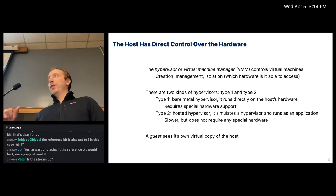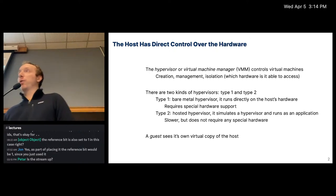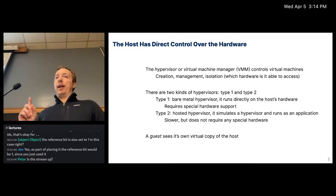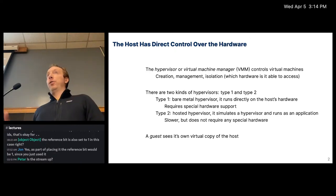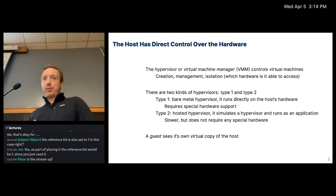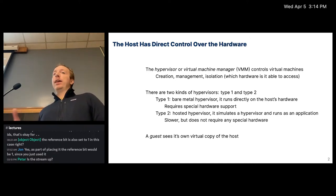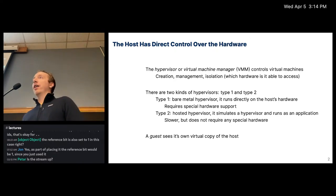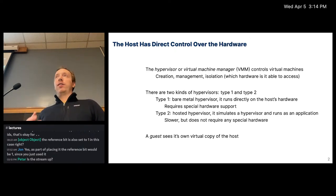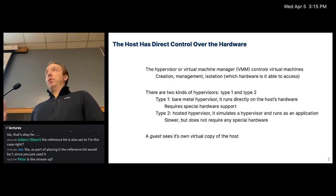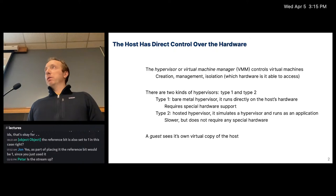There are two kinds of hypervisors. Type 1 is called a bare metal hypervisor — it runs directly on the host hardware and your hardware needs special support for this, which thankfully all modern CPUs have. Type 2 is called a hosted hypervisor and it simulates a hypervisor in software. Your virtual machine just runs as a normal user application. All the emulation it does is just running as a user process, so it's a bit slower.